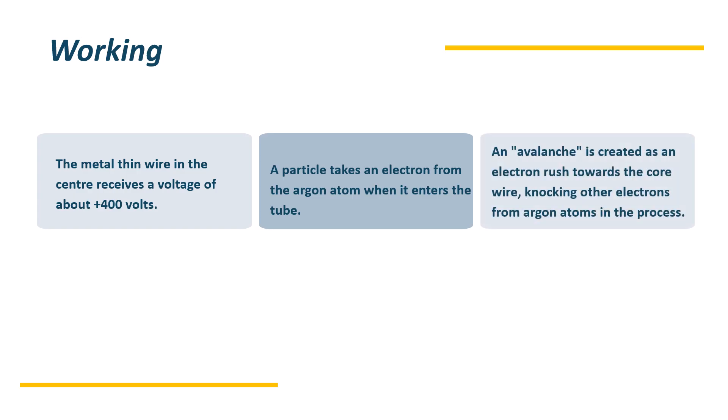An avalanche is created as electrons rush towards the core of the wire knocking other electrons from argon atoms in the process. As a result, a single incoming particle will cause many electrons to reach the wire producing a pulse that may be measured and amplified.